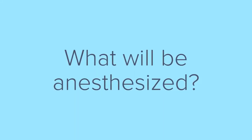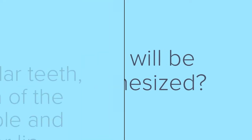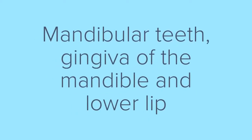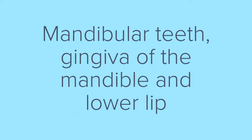Now when you give the block, what will be anesthetized? In order to make sure that you gave the proper injection technique: the mandibular teeth, gingiva of the mandible, and the lower lip. So if the patient tells you their lips are numb, it means the block technique is successful.